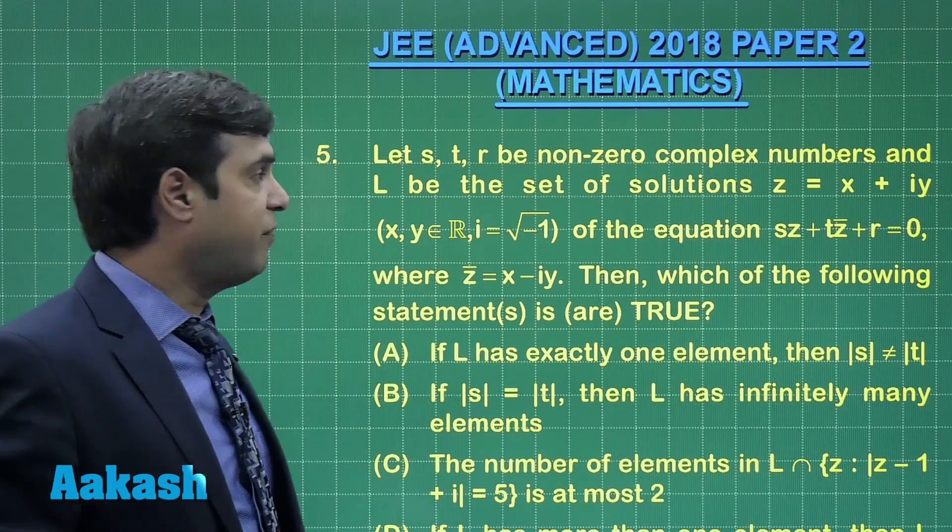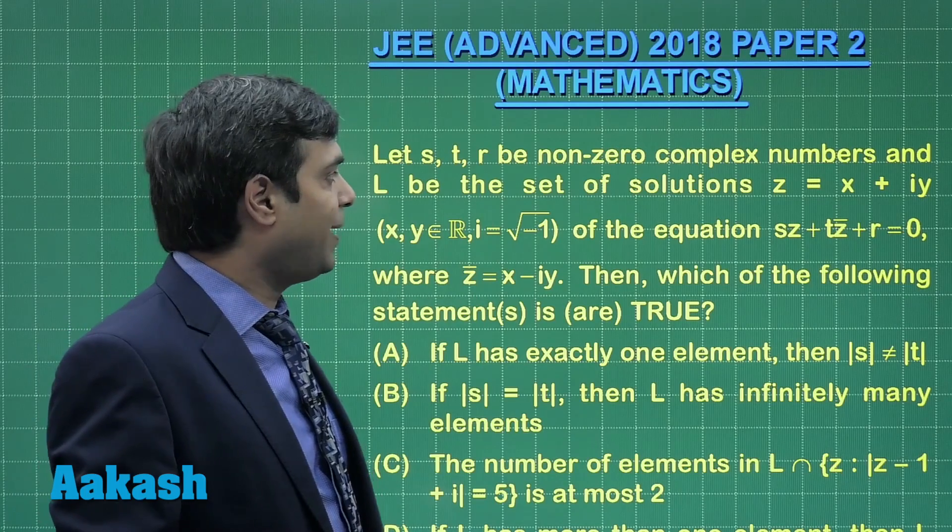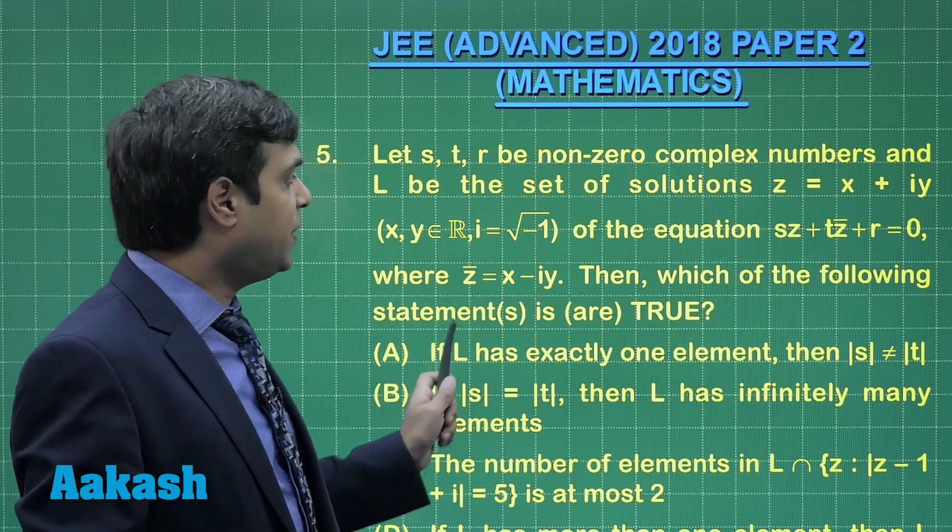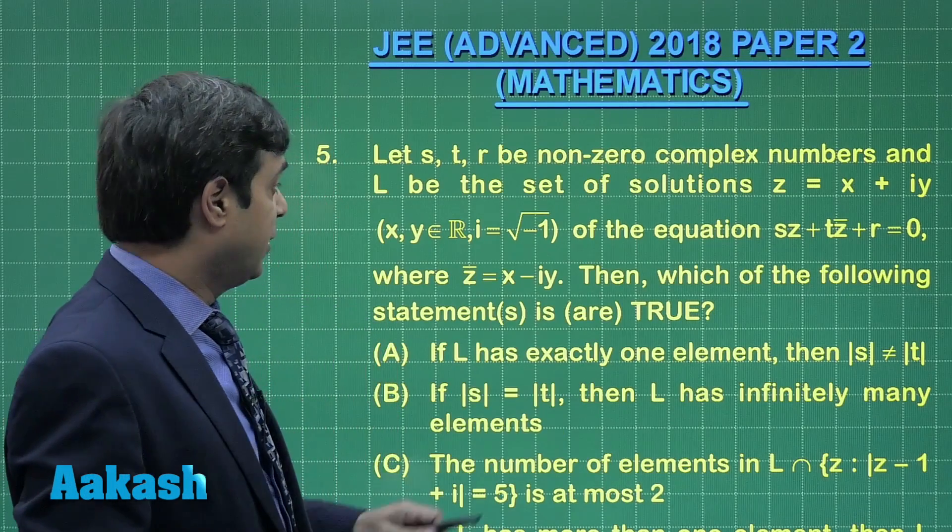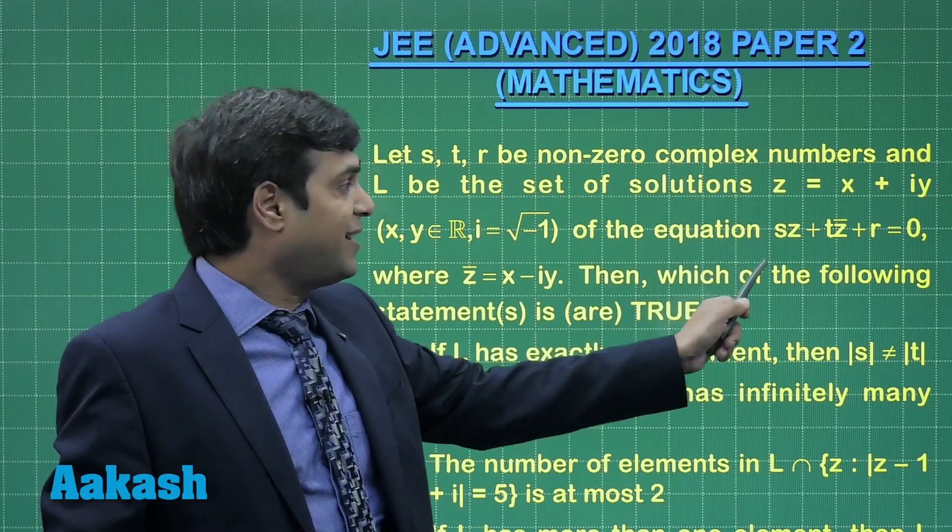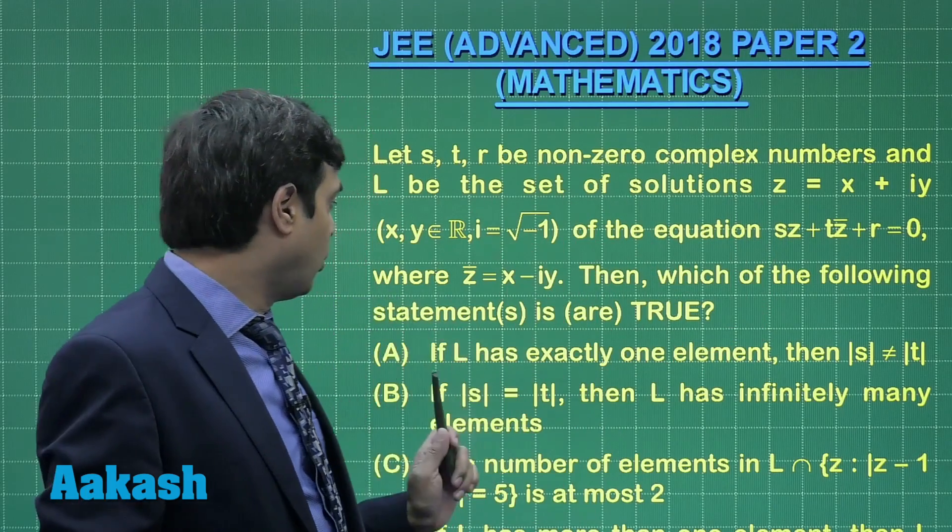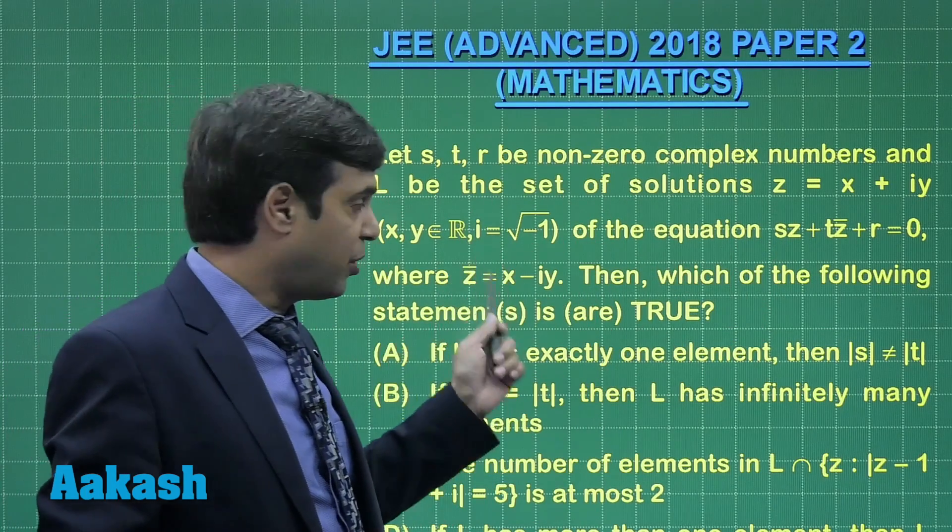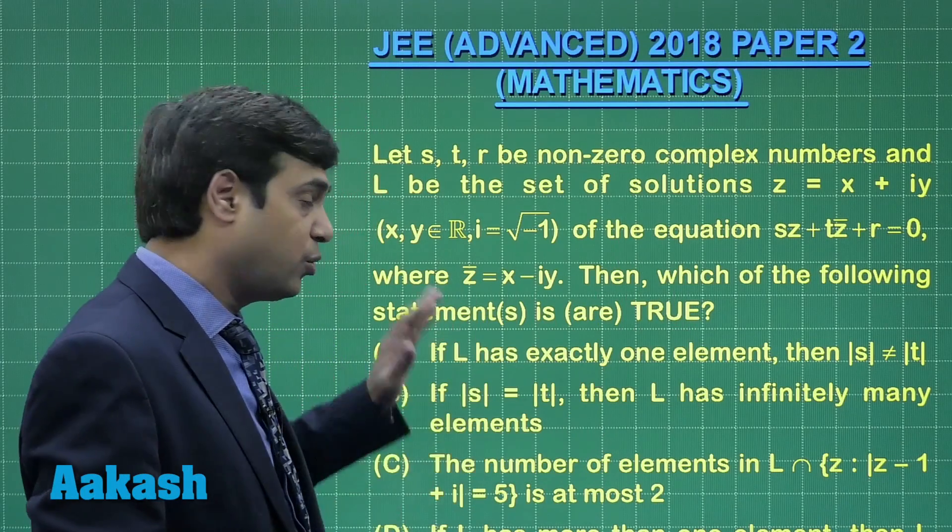Moving to question number 5 now. Let S, t, r be nonzero complex numbers and L be the set of solutions z equals x plus iota y of the equation Sz plus Tz̄ plus r equals 0, where z̄ is conjugate of z. Then which of the following statements are true?